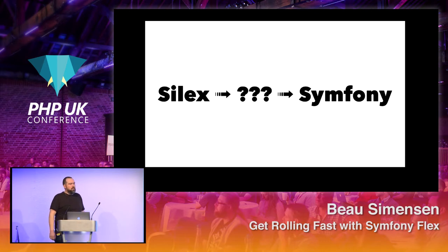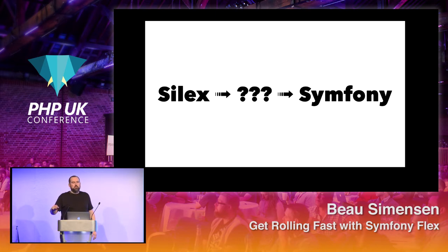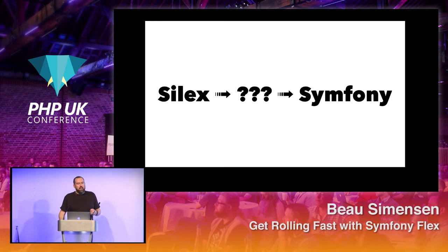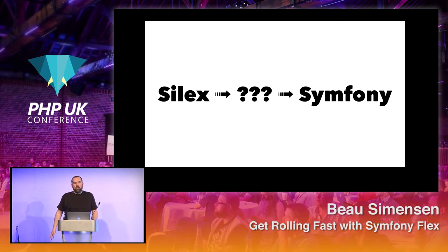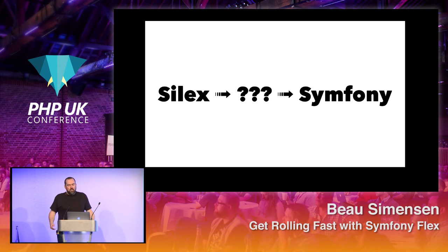Up until recently, the way that you would make that decision in the Symphony ecosystem would be to choose between Silex or Symphony. The problem with Silex is that it's Symphony-ish, but it's not quite Symphony. So you can't just take your Silex application and easily upgrade it to a Symphony application. It is, however, really easy to get running. Symphony, on the other hand, takes a little bit of work to get up and running, especially if you start with the Standard Edition. You might have to remove some bundles and look at a bunch of configurations you might not need yet.